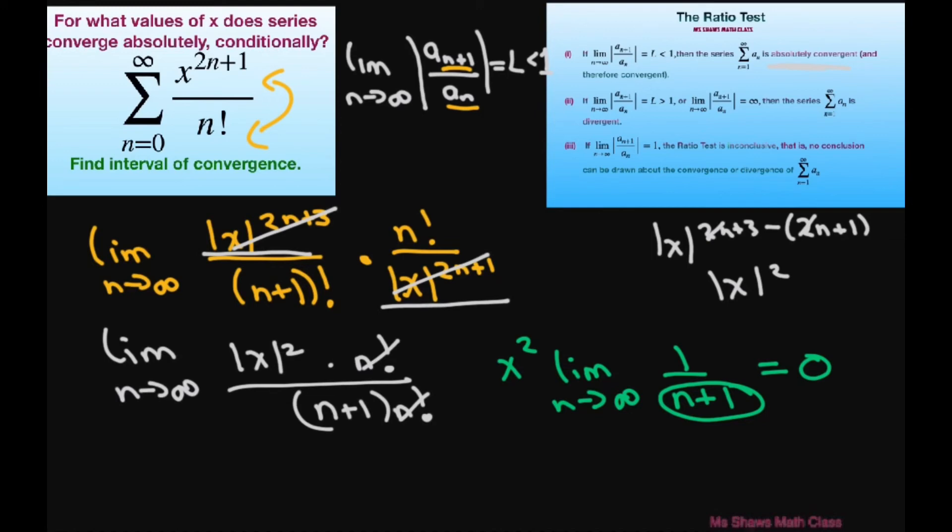So basically the series converges for all real numbers. I'll just put for all real numbers. The upside down A means for all. And then so the interval of convergence is negative infinity to infinity.